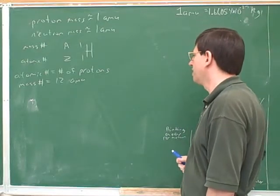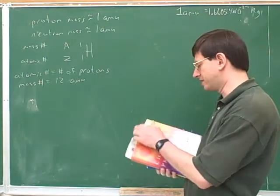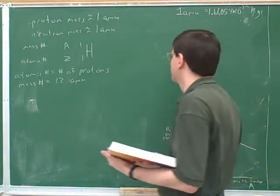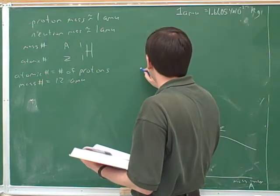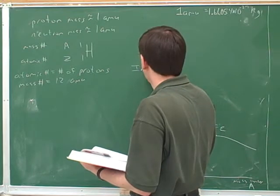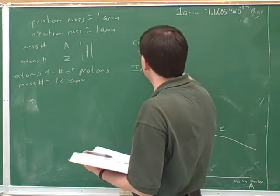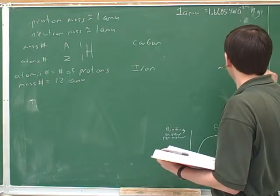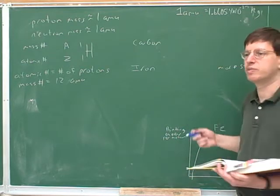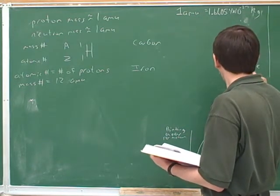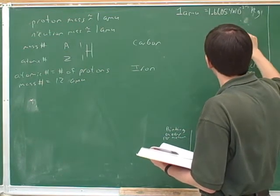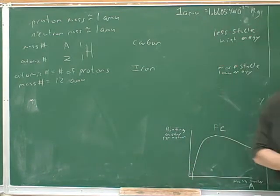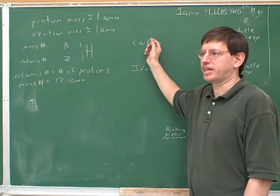Some elements are more stable than other elements. For example, iron is more stable than carbon. When something is more stable, we usually say it is low energy — stability means low energy. So less stable means high energy. That's why I put carbon higher on the board to indicate the higher energy.